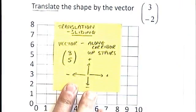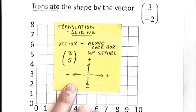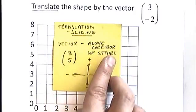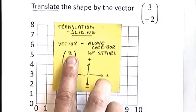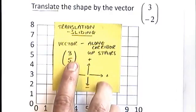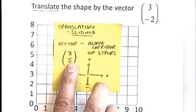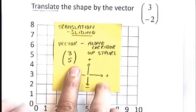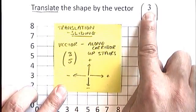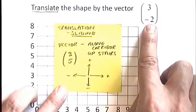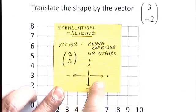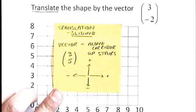You need to know that translation means, or translate means slide the shape. A vector follows the same rules as you would use for a coordinate. Along the corridor, up the stairs. So the first number that you see is how far along, and the second number is how far up or down the stairs you're going to go. So if we look at our vector here, we've got three along the corridor and a minus two up the stairs.